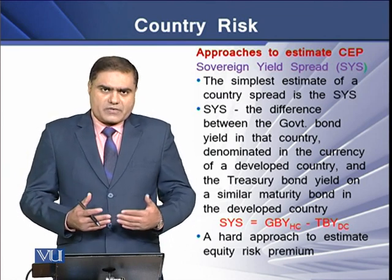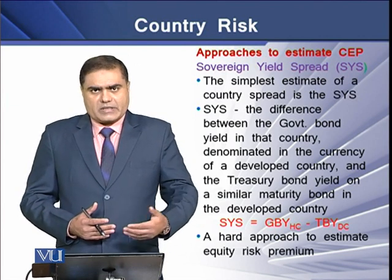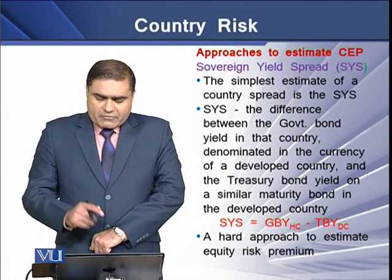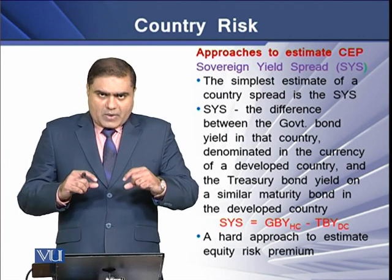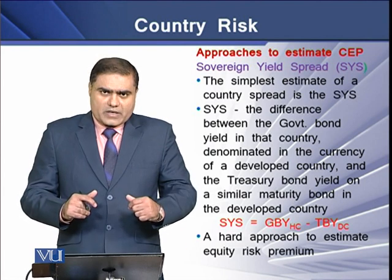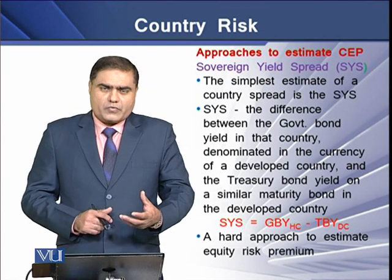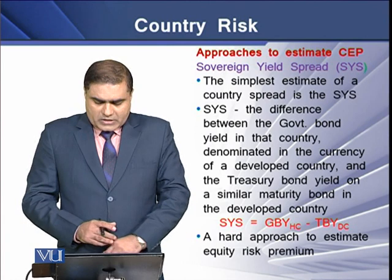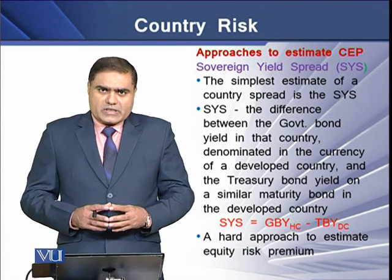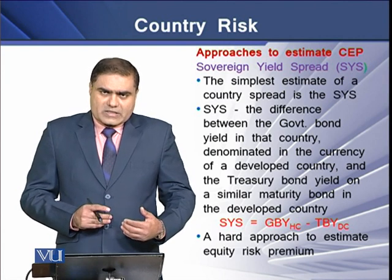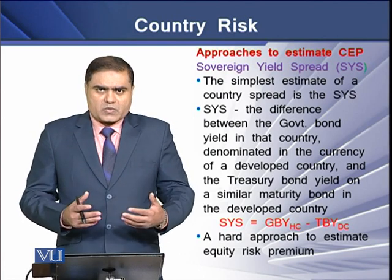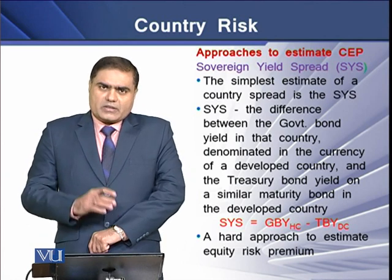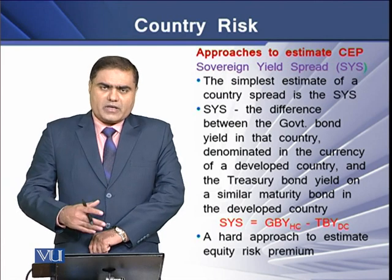With Pakistan as the developing country and the US as the developed country, to determine the sovereign yield spread we need government bond yields from Pakistan denominated in US currency, and we need treasury bond yields from the US on similar maturity bonds. The spread between these two values is called the sovereign yield spread, though it is somewhat difficult to estimate in practice.